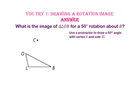First, use a protractor to draw a 50 degree angle with vertex B and side BL. Then use a compass to construct side BL prime that is congruent to side BL.